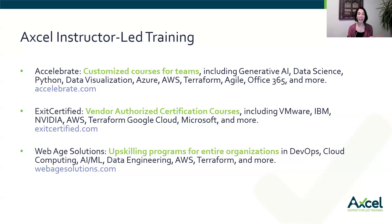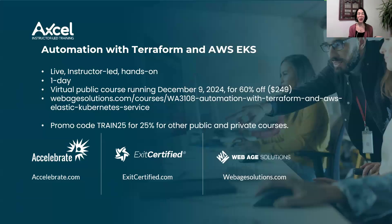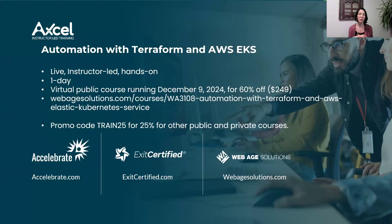We teach a lot of classes — AWS, Terraform, and many others. No matter which of us you get in touch with, we'll lead you to the right place. We have an automation with Terraform and AWS EKS training coming up as a public virtual course running December 9th — 60% off, just $249 for the day. It's live, instructor-led, and hands-on. For a private class or different date, use promo code TRAIN25 for 25% off.